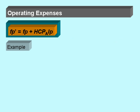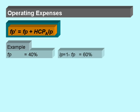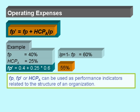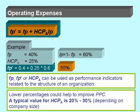As an example, we have a fixed percentage of 40%, so the labor percentage is 60%. Our admin headcount is 25% of the total headcount. So we calculate F' as 0.40 plus 25% multiplied by 60% labor percentage, resulting in 55%. FP' or headcount percentage admin can be used as performance indicators related to the structure of an organization. Lower percentages could help to improve the profit per cost.